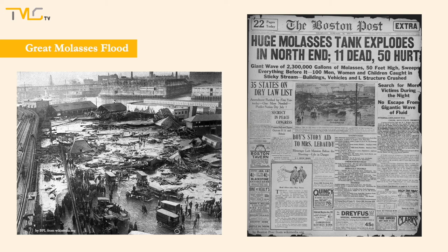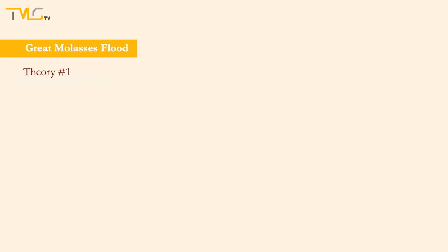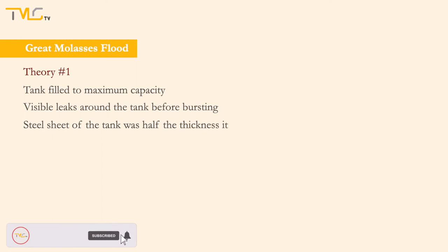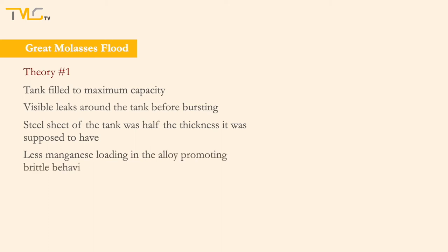There are some theories. One thing mentioned was that the tank was filled to its maximum capacity with extra molasses just before the disaster, and existing molasses leaks before filling were ignored. Furthermore, the steel sheet used in the production of the tank was said to have half the thickness it was supposed to have, making the tank not strong enough to hold molasses at full capacity. The steel was also reported to have less manganese than required, which promoted brittle behavior in the alloy. Further analysis revealed that the initial cracks were formed at the rivet holes due to flawed rivets.